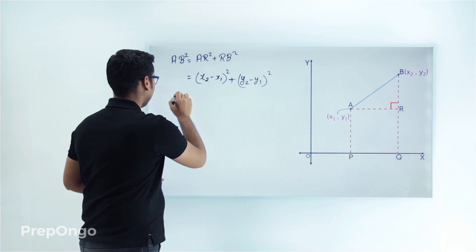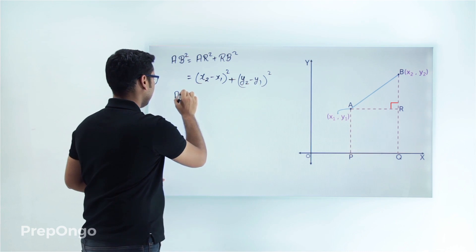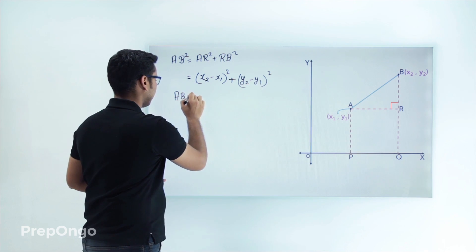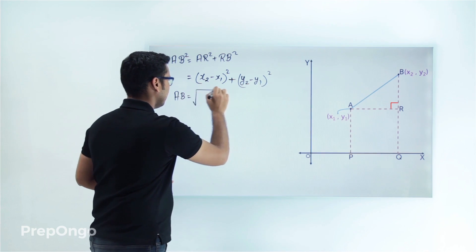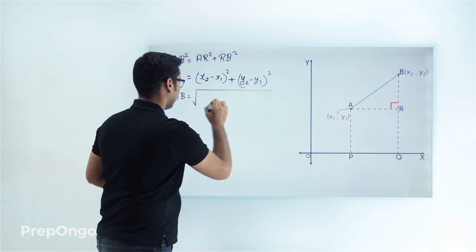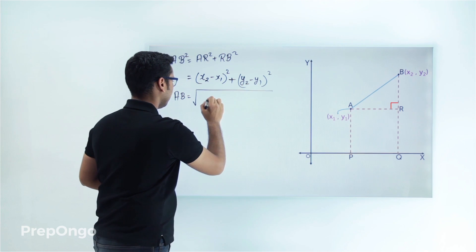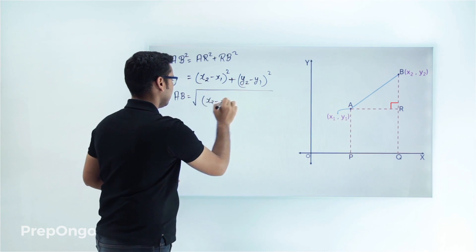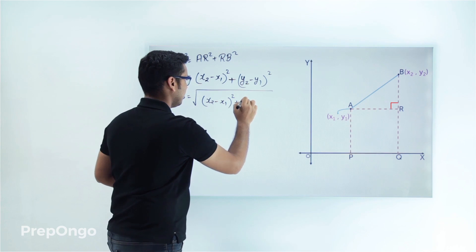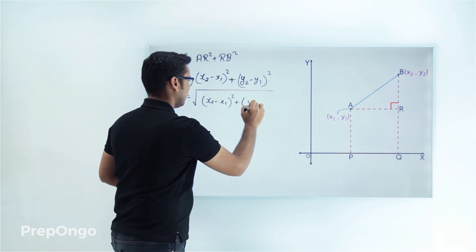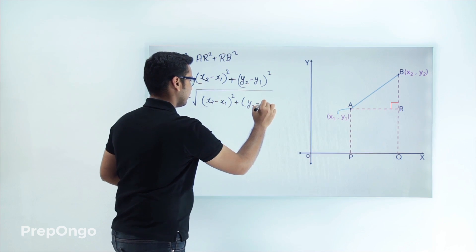So let's put the values: AB squared will be (x2 minus x1) whole square plus (y2 minus y1) whole square. Now if we have to find out the length AB, let's take the square root on both sides. So AB equals the square root of (x2 minus x1) whole square plus (y2 minus y1) whole square.